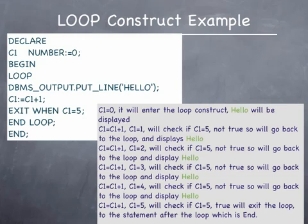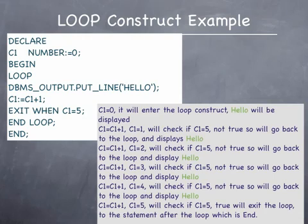On this slide is the program that you would write to display the word hello on the screen five times. It begins with the word declare, followed by a variable called C1 being declared to be of number type. An initial value of 0 has been assigned to C1. In the body of the program, which begins with the word loop, is a loop construct which has within it a DBMS output line statement that displays the word hello, followed by an assignment statement C1 := C1 + 1. This statement increments the current value of C1 by 1. This is followed by an exit statement written as exit when C1 = 5, used to come out of the loop construct, which ends with end loop. The program then ends with the word end.